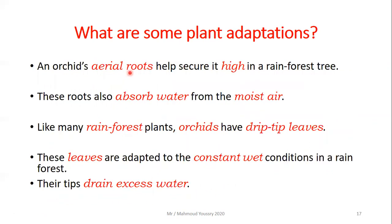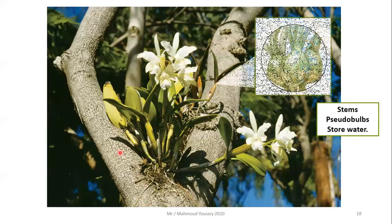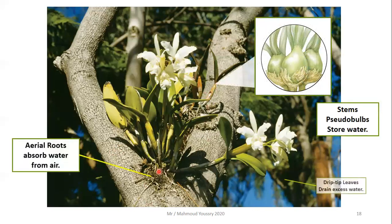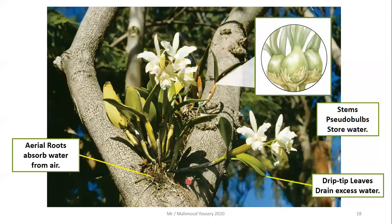An orchid's aerial roots help secure it high in the rainforest tree. These roots also absorb water from the moist air. Like many rainforest plants, orchids have drip tip leaves adapted to the constant wet conditions in the rainforest. Their tips drain excess water. So orchids have aerial roots to absorb water from the air, drip tip leaves to drain excess water, and pseudobulbs to store water.